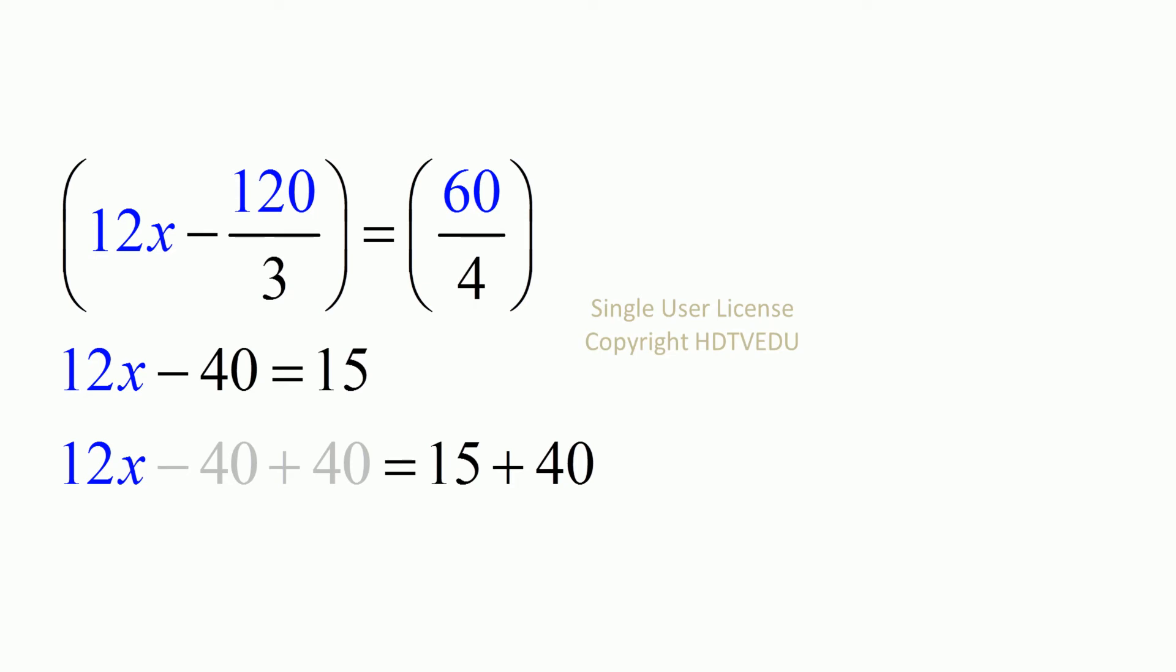So 12x minus 40 equals 15. Add 40 to both sides. And what do we get? 15 plus 40 is 55.